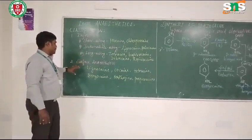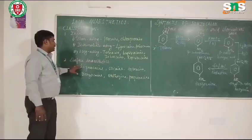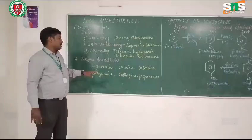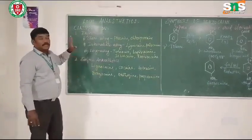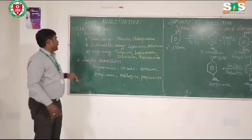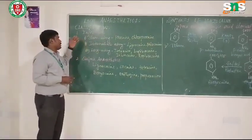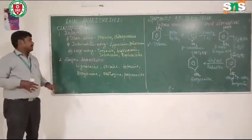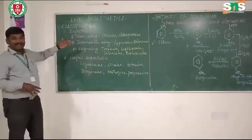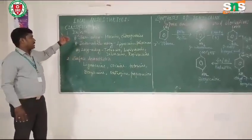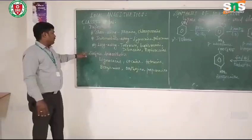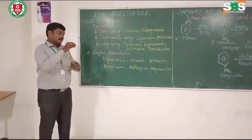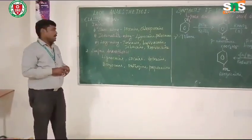The second type is surface anaesthetics. Examples include lidocaine, benzocaine, tetracaine, dibucaine, oxybuprocaine, and piperocaine. So the classification according to their action is basically two types: injectable and surface anaesthetics. Injectables are further classified into short-acting, intermediate-acting, and long-acting. Surface anaesthetics are applied directly to a particular area and produce their local anaesthetic action.